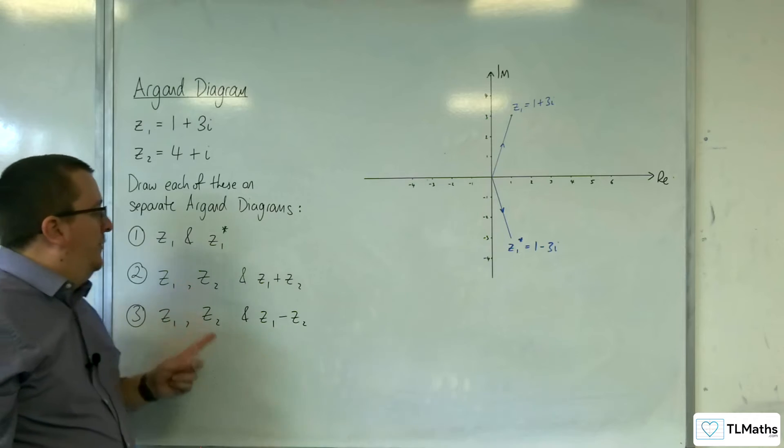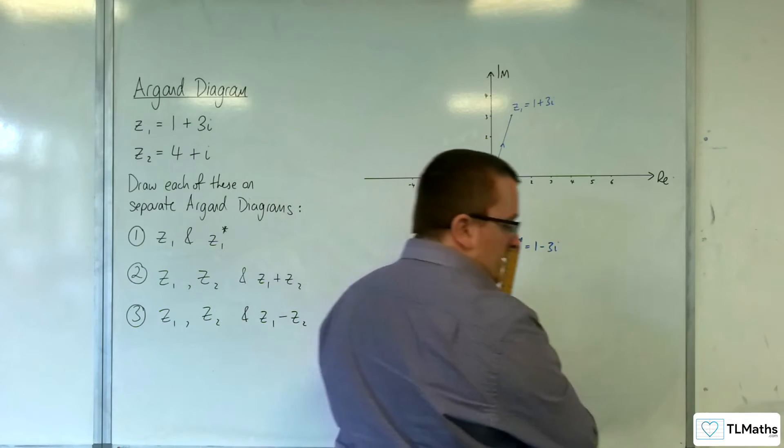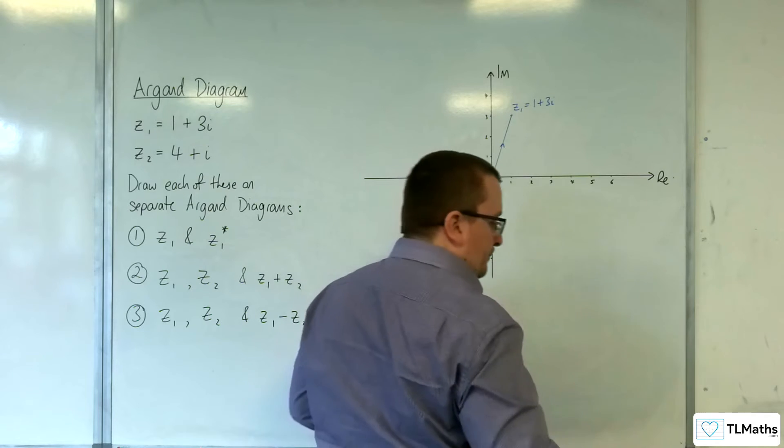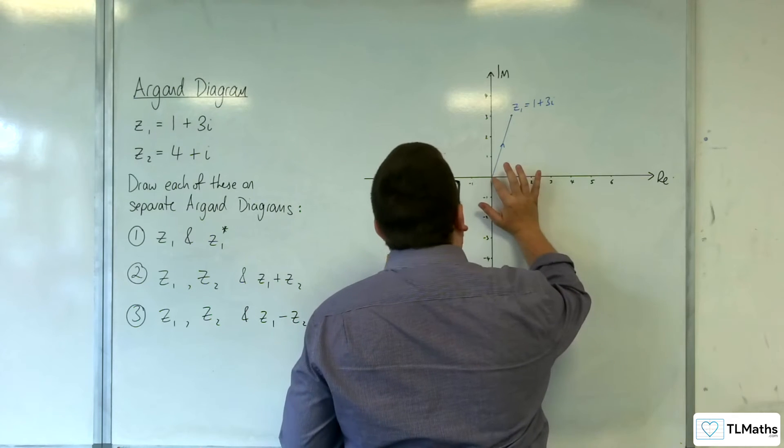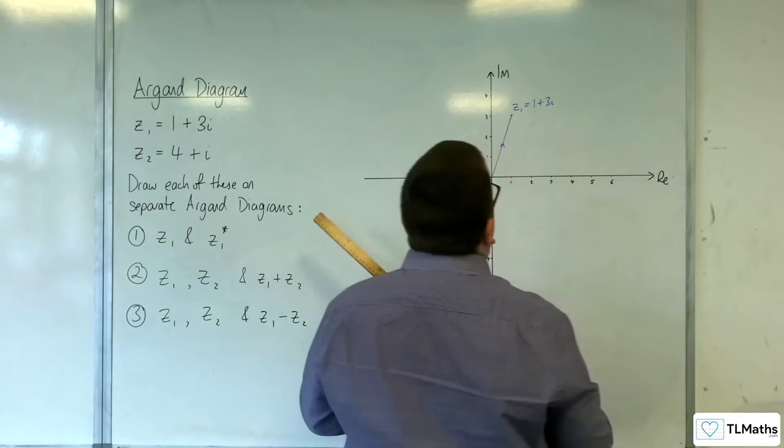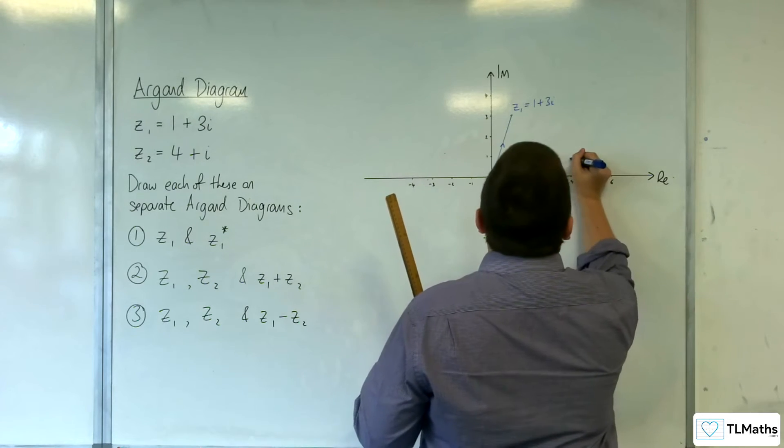So, let's take a look at number 2 now. I don't need Z1 star, so I can get rid of that. I'll keep the Z1 though. Right, so Z2 is 4 plus i. So, 4 long and 1 up.